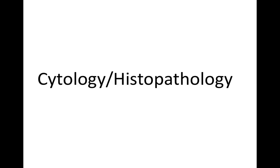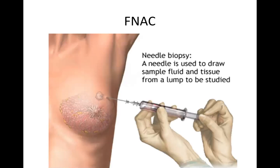The third component is cytology or histopathology. FNAC is usually the first choice because it can be performed on an outpatient basis. All you need is an ordinary 5cc syringe. It is inserted inside the lump, negative suction is applied, and it enables suction of a few cells into the syringe. Those cells are placed on a slide, fixed, and examined under the microscope for malignant cells.